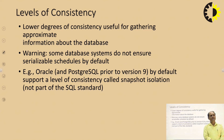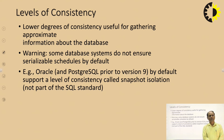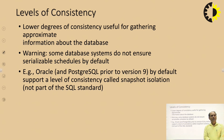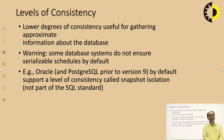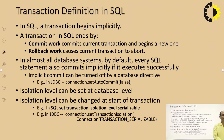A lower degree of consistency is useful for gathering approximate information about the database. Warning: some database systems do not ensure serializable schedules by default. For example, Oracle and PostgreSQL prior to version 9 by default support a level of consistency called snapshot isolation, which is not part of the SQL standard.